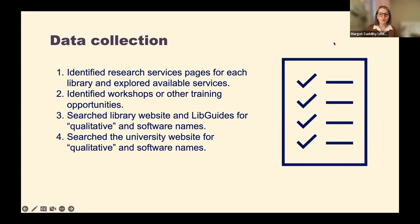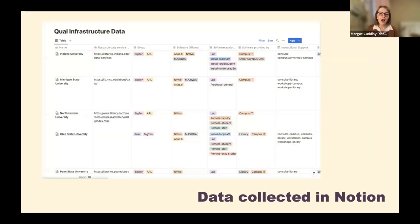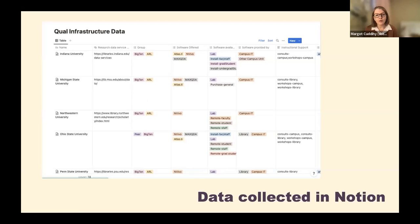We recorded any relevant pages that appeared in those searches, and then we repeated the same process for the university's main homepage. We compiled our data in Notion. The main database includes information like a link to the research data services page, who collected the data, group designations, software offerings, and more — shown as colored label boxes in each column. Similar to spreadsheets, you can use these labels to sort the data.